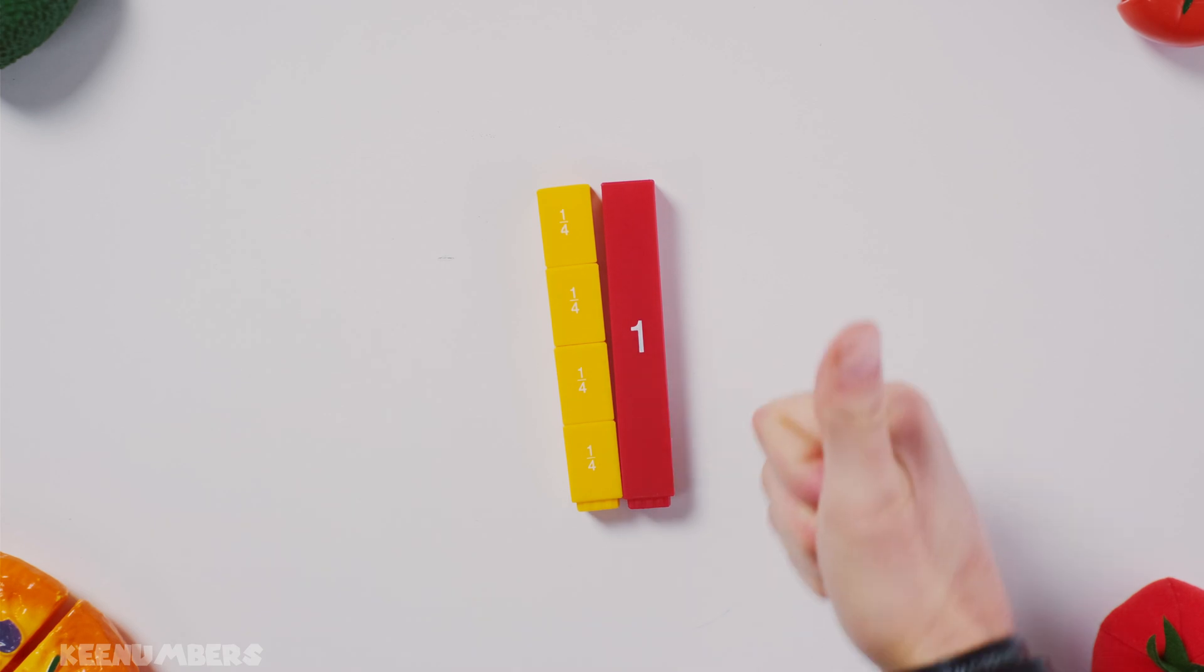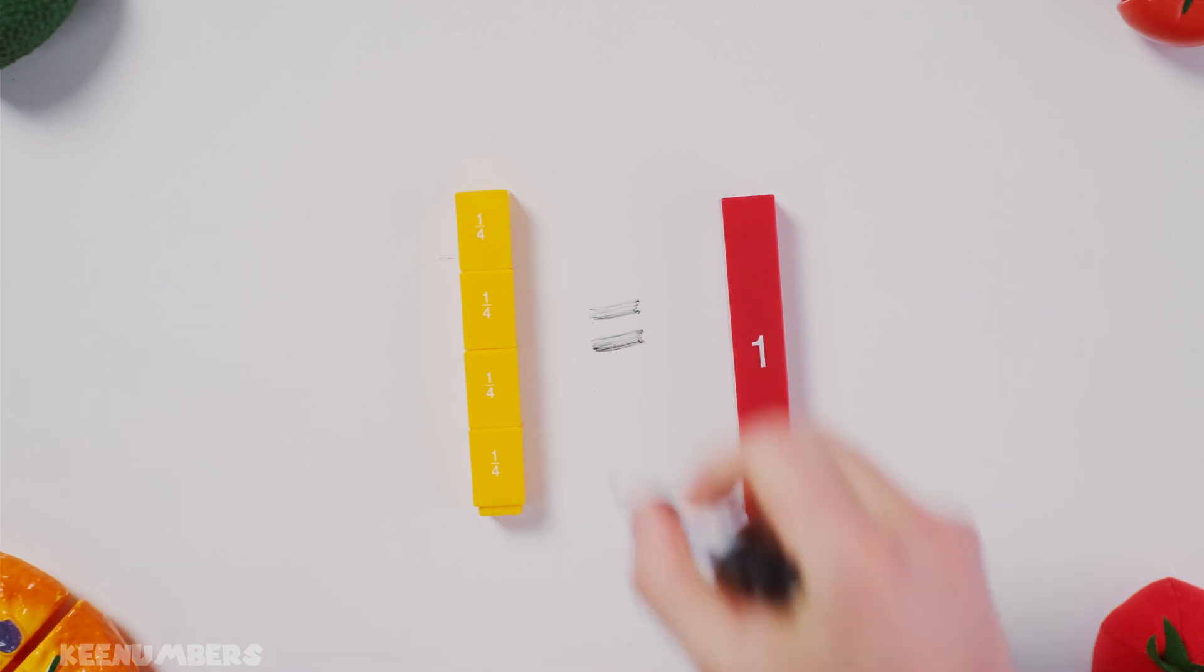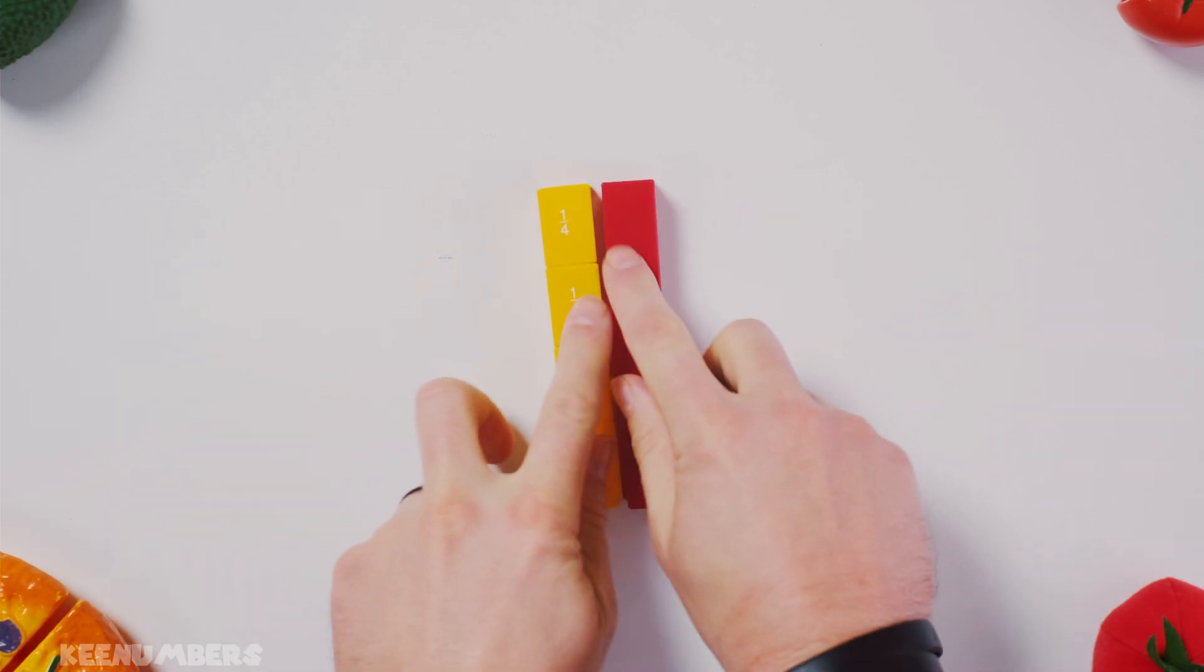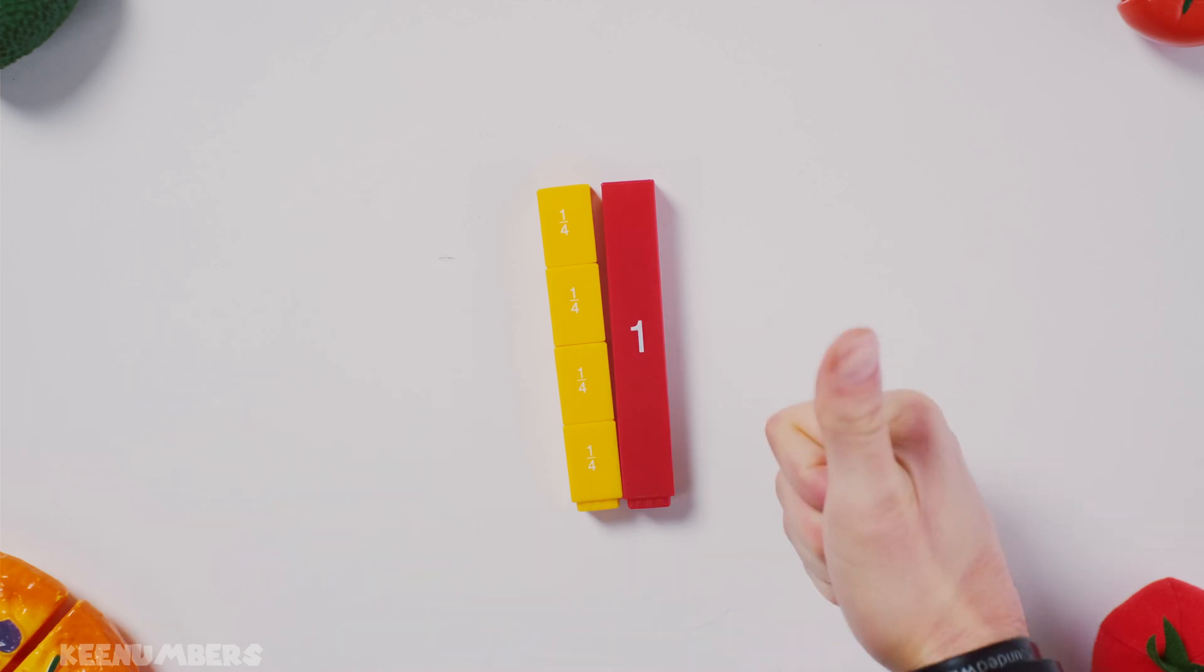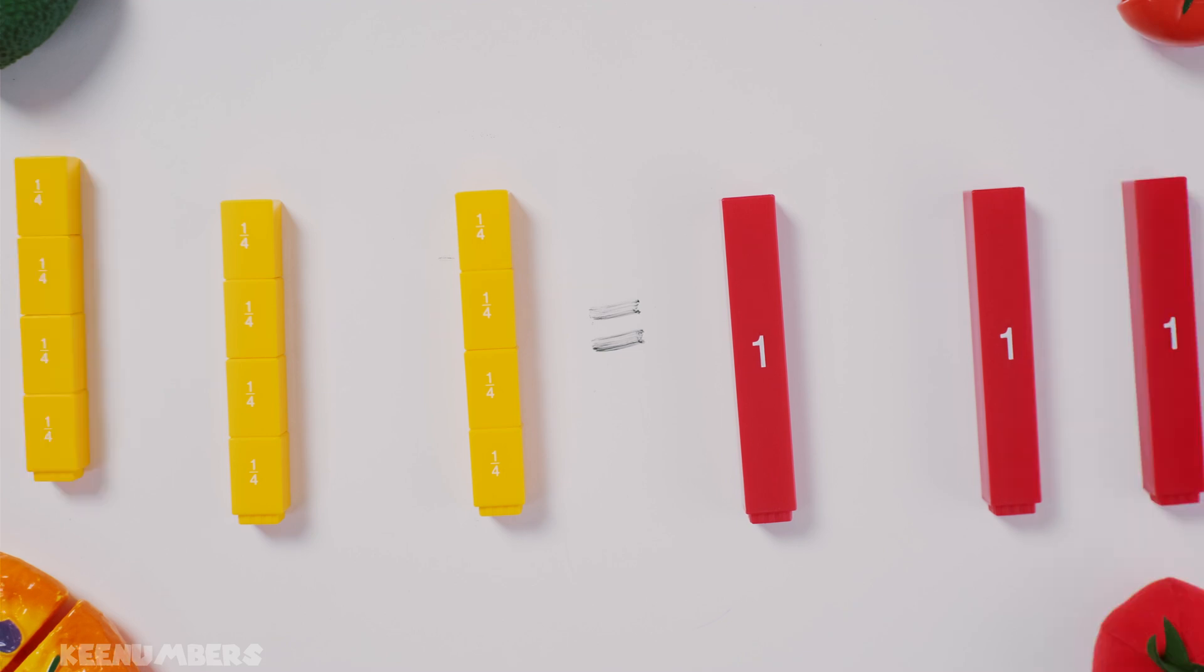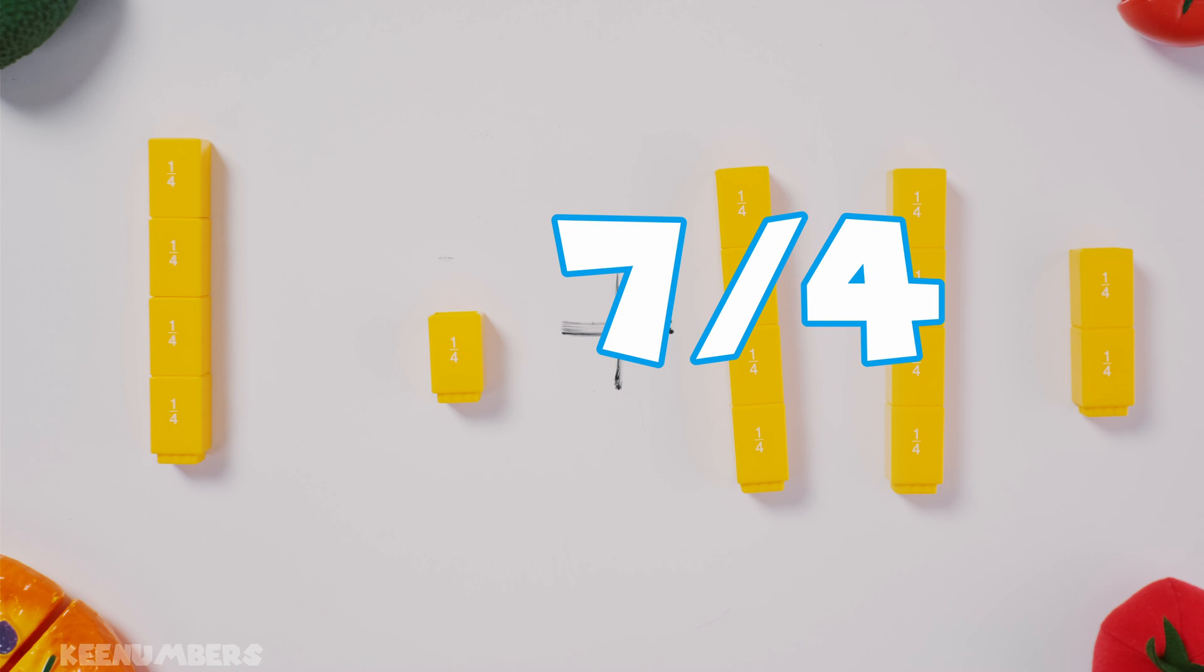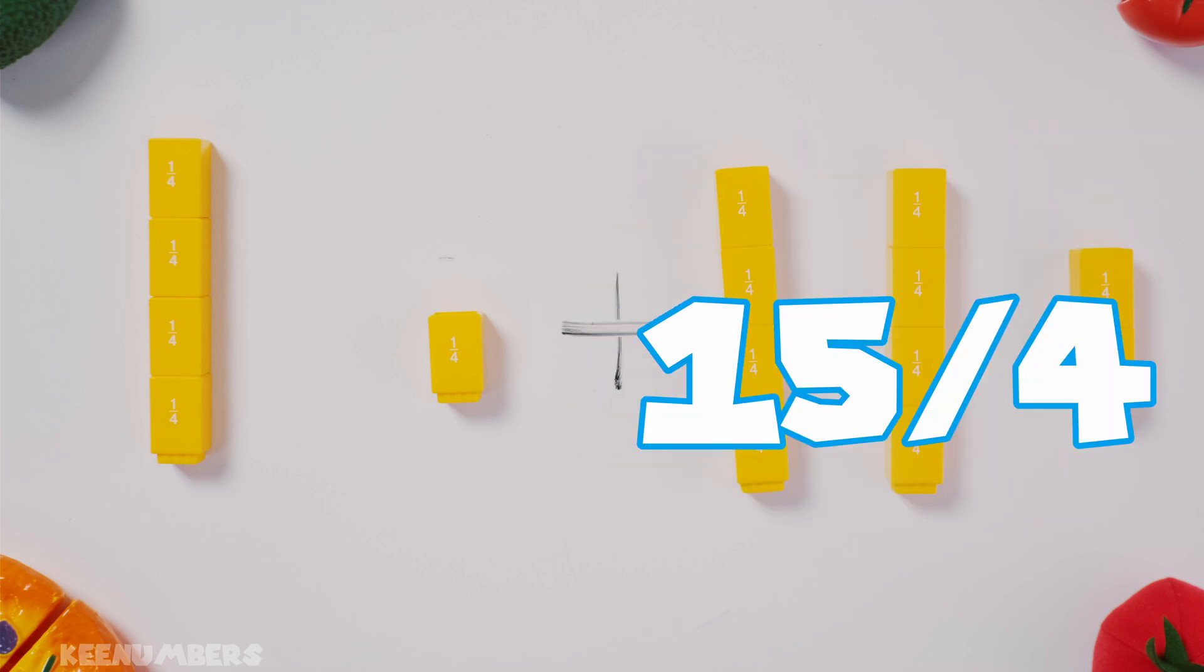Now, remember, 4/4, that's equal to 1. So every time you have a whole number, that's 4/4. 4 quarters in one whole number. So 2 whole numbers, that's 8 quarters. 3 whole numbers, that's 12 quarters. So if you have 15 quarters, you're talking about 3 whole numbers plus 3 quarters.